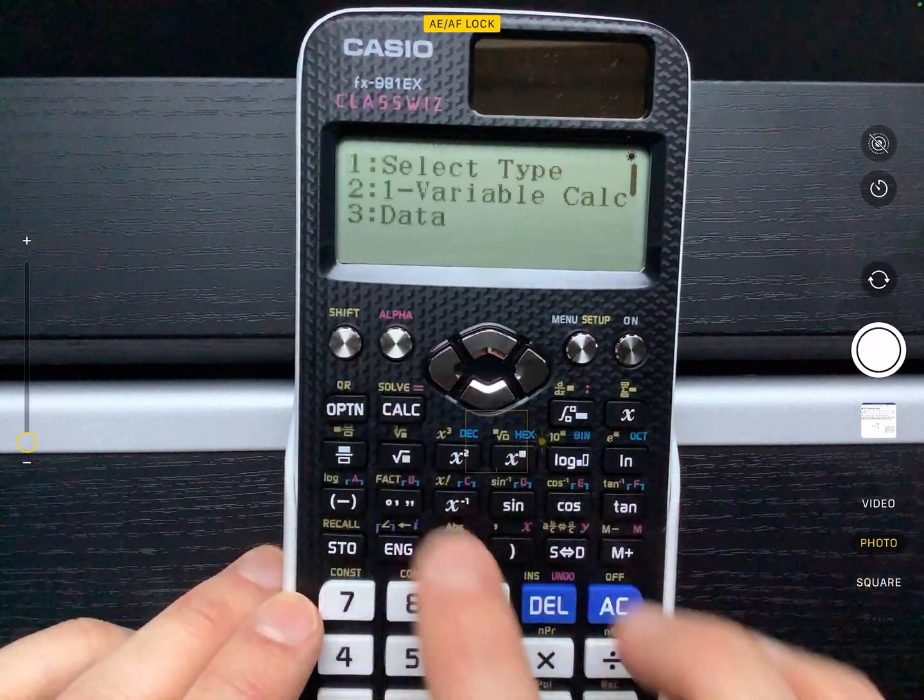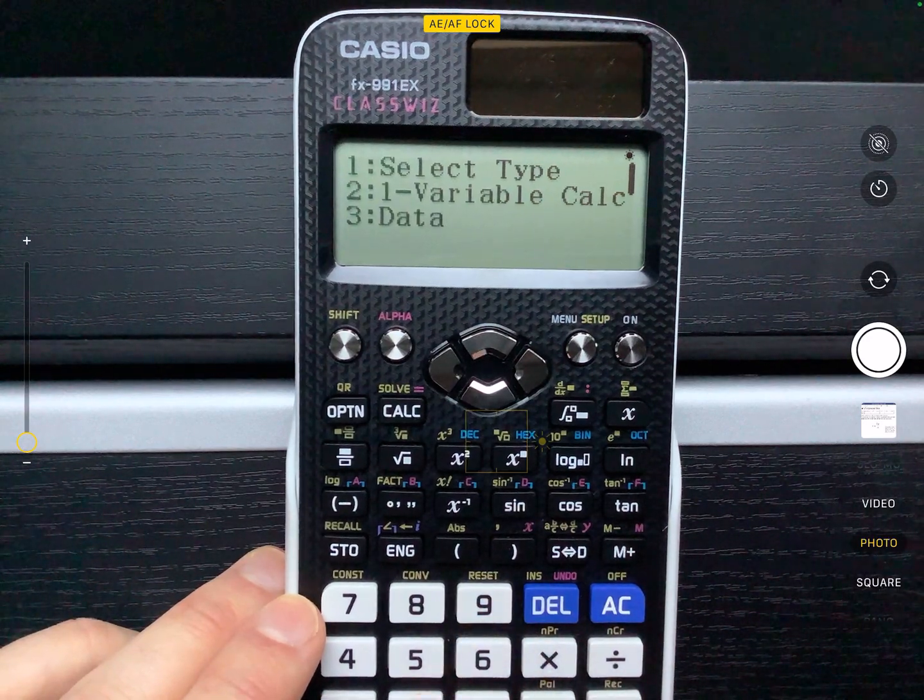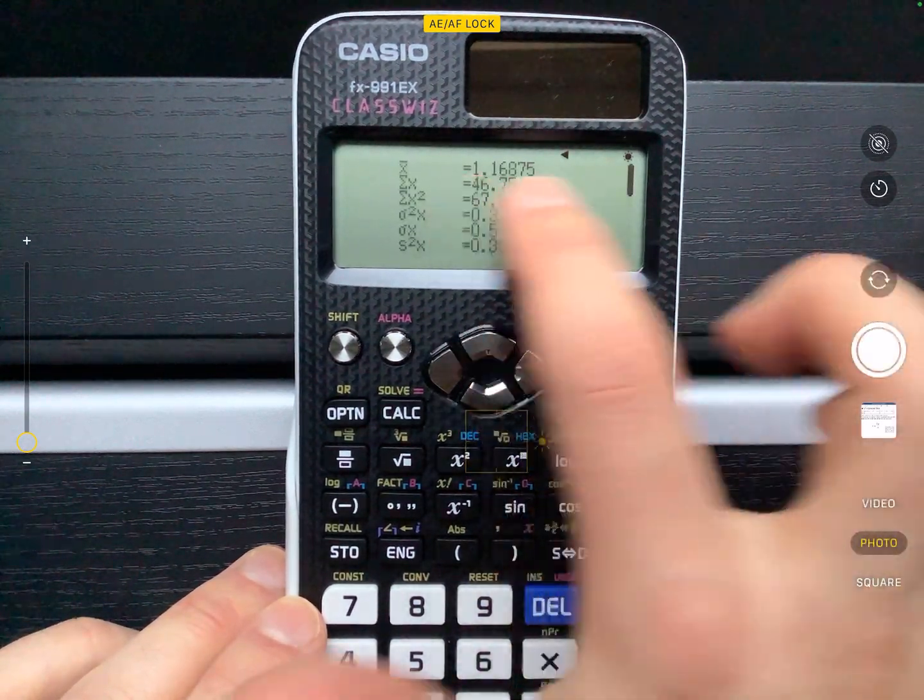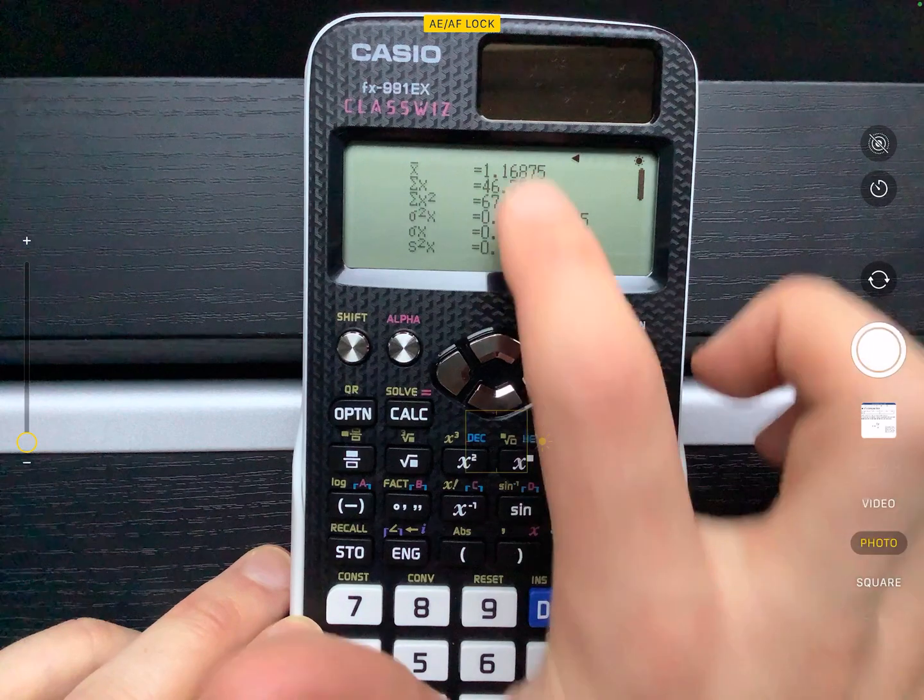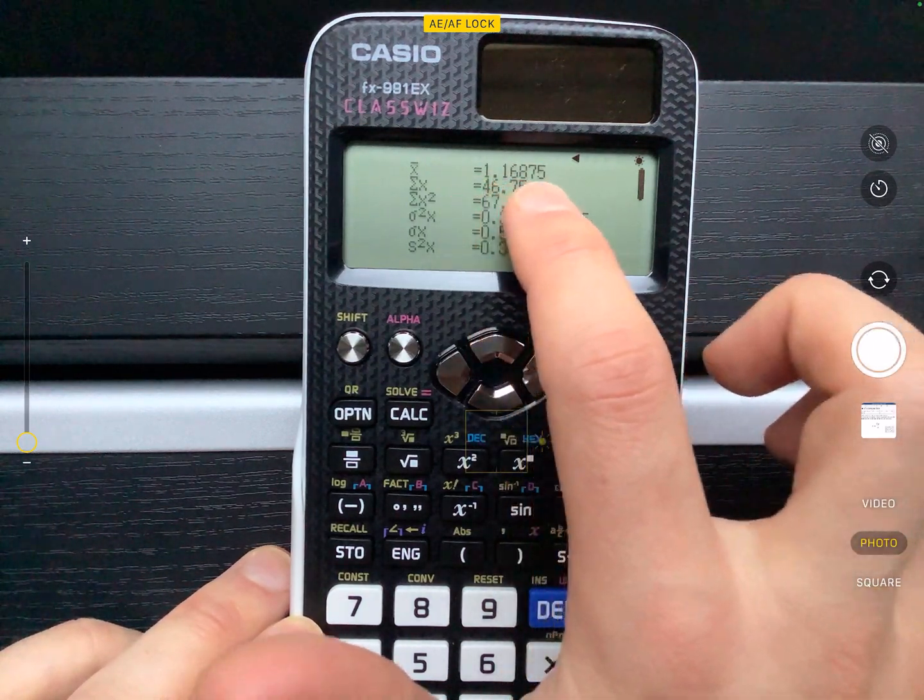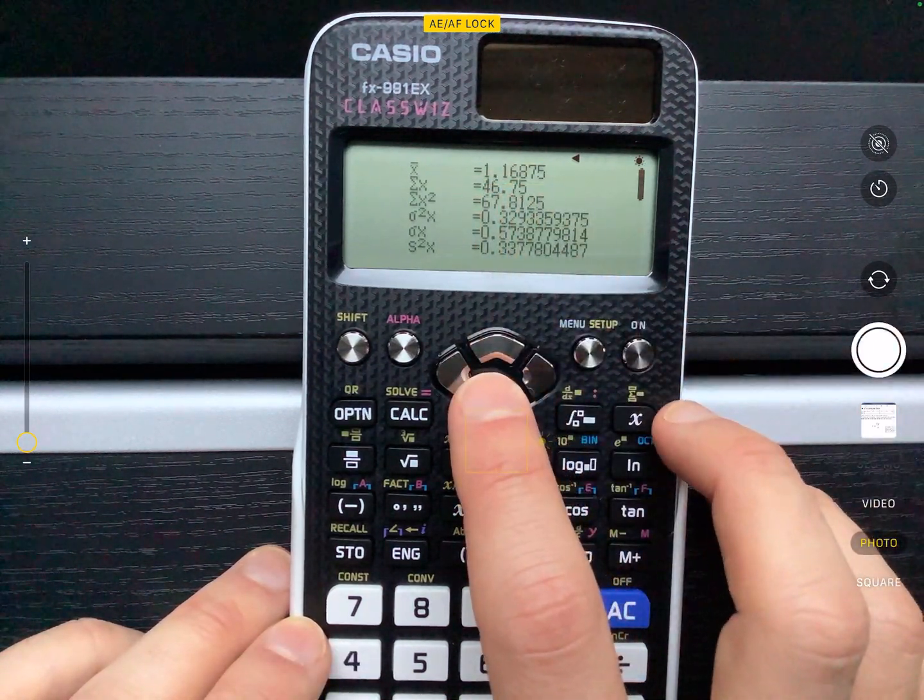I'm going to go options. I'm going to do one variable calculation. And you'll see all of the different things that I've got here. So I know that the answer is 1.16875, but I'm going to show you what I'm going to write down.